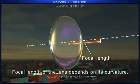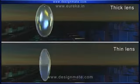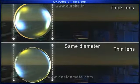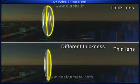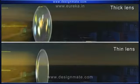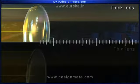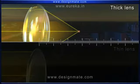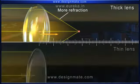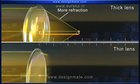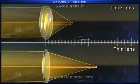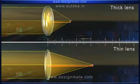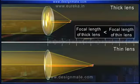The focal length of the lens depends on its curvature. Take two lenses of the same diameter but of different thickness and hence curvature. When the parallel light rays are incident on them, you can observe that the light rays passing through the thick lens undergo more refraction and get converged at a shorter distance, as compared to the thin lens, which causes less refraction. So the thick lens has a shorter focal length than the thin lens.